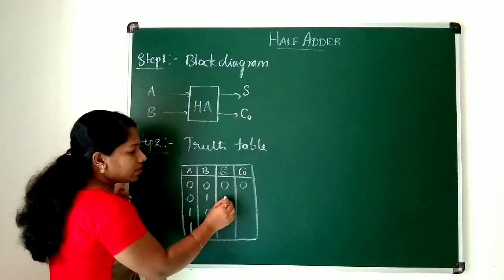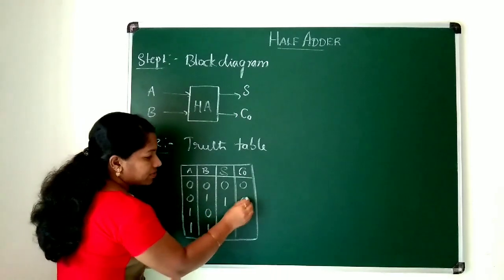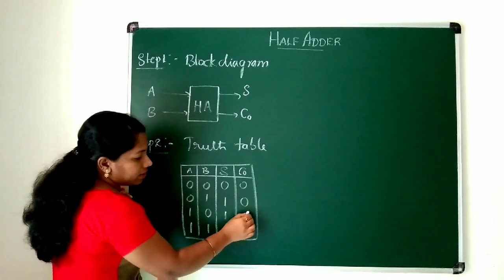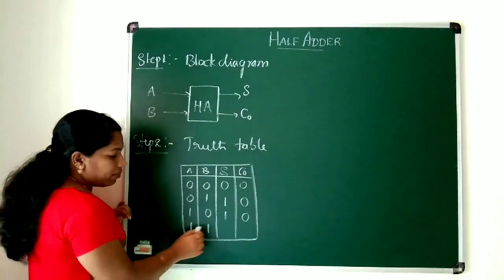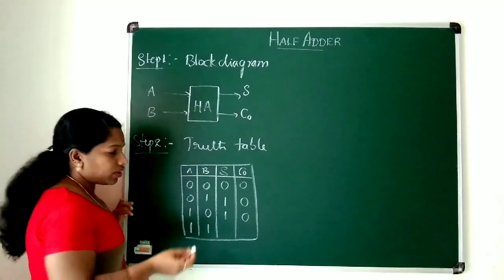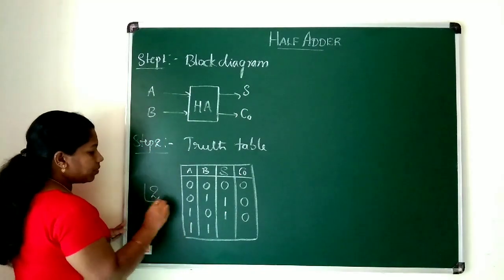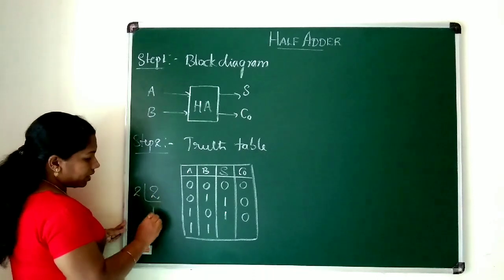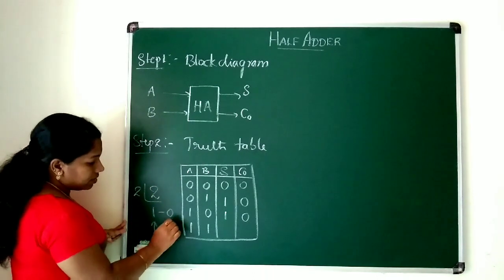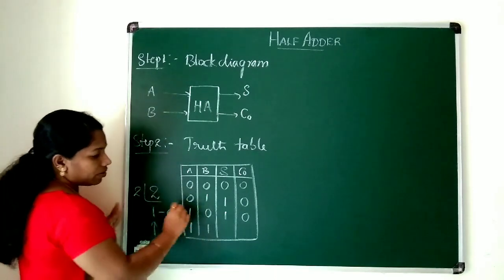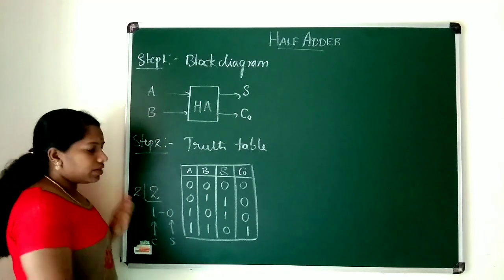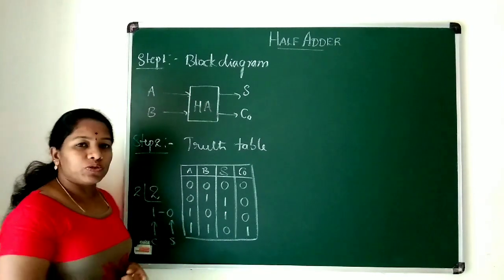0 plus 1 gives sum=1 and carry=0. 1 plus 0 gives sum=1 and carry=0. For 1 plus 1, we are adding in the decimal system, so we convert back to binary: 2 equals 1×2 remainder 0, so carry=1 and sum=0. The truth table is now complete.